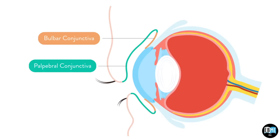The conjunctiva has specialized goblet cells which produce part of the tear film that keeps the surface of the eye lubricated and helps ward off infection.